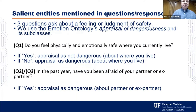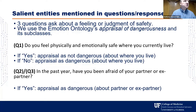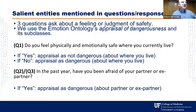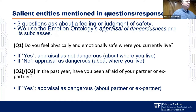Three questions ask about a feeling or judgment of safety, so we are reusing the emotion ontology here. It has a class, appraisal of dangerousness, with several subclasses. If the answer is yes, then there is an instance of appraisal as dangerous. If you feel safe, then you have an instance of appraisal is not dangerous. If you answer no, you have an instance of appraisal as dangerous. In both cases, you have an appraisal.